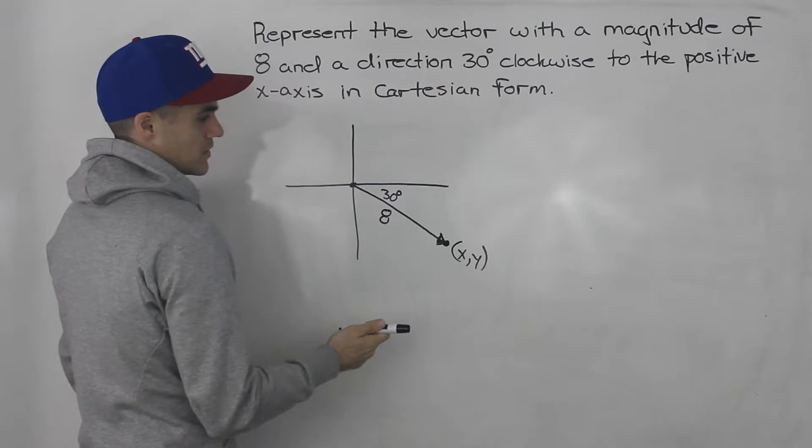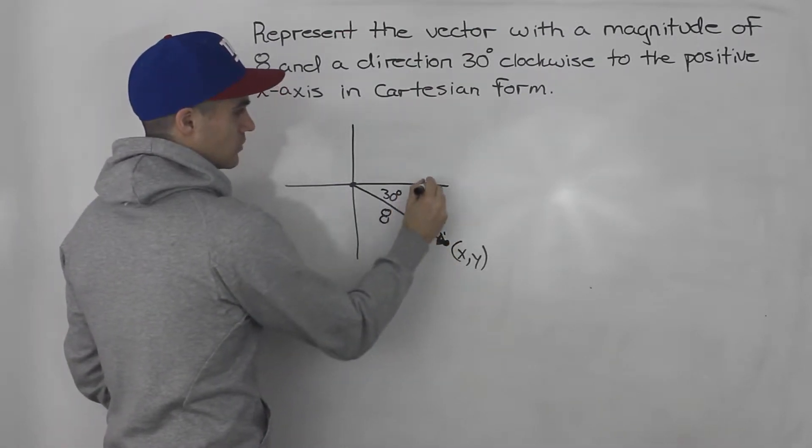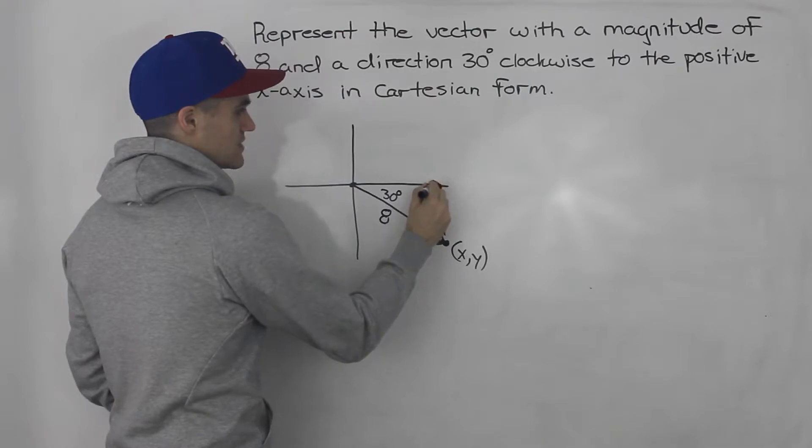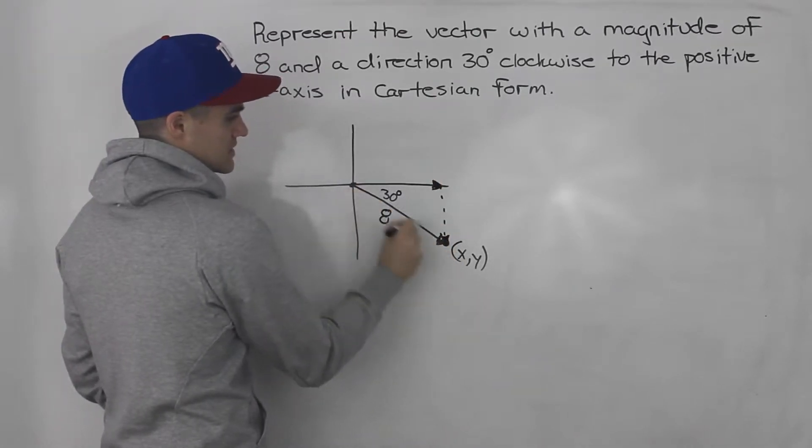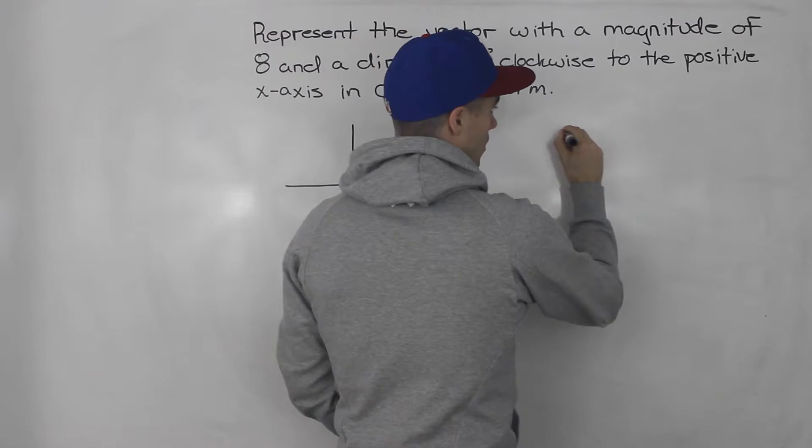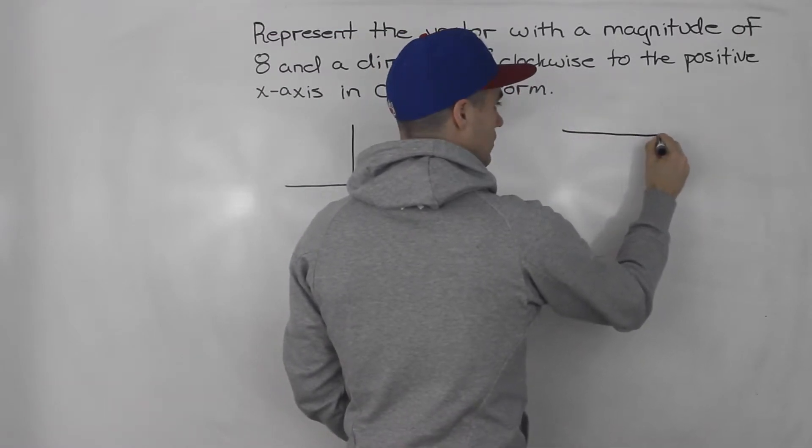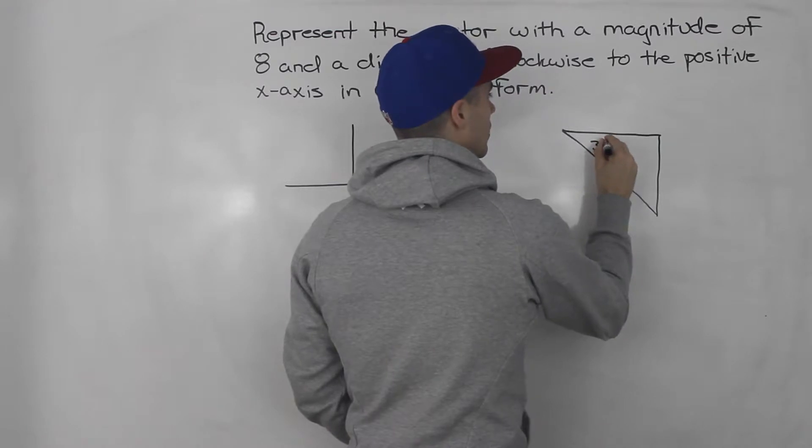So how can we represent it like this given this information? Well, notice that we can make a right angle triangle. We can take this vector, add this vector to give us this resultant vector. And this is just a right angle triangle. So notice that we can even just draw this here like that. And this has a magnitude of 8.